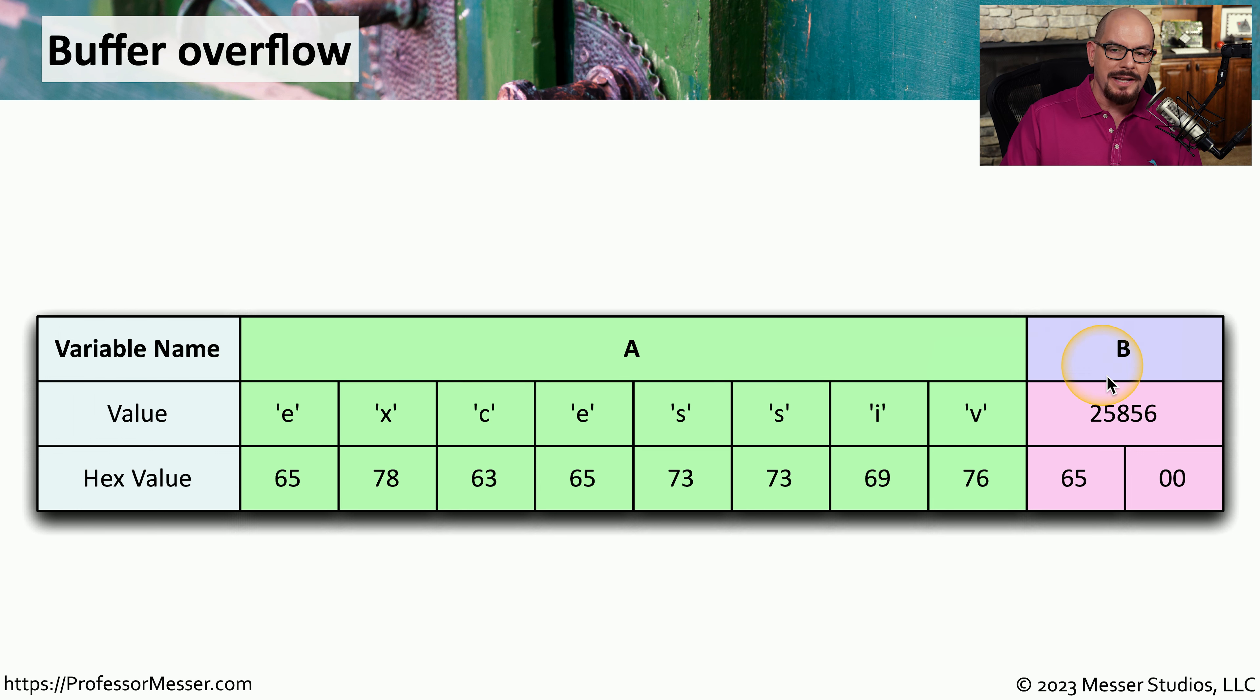You can see that this buffer overflow has now changed the value of variable B. And now its value is 25,856. And as we've already said, any value of over 24,000 in variable B provides that user with the rights and permissions of an administrator.